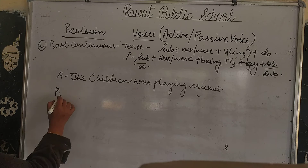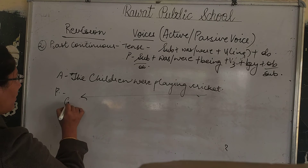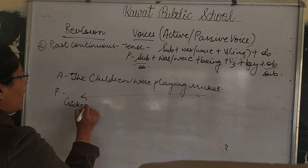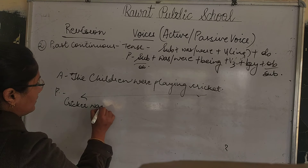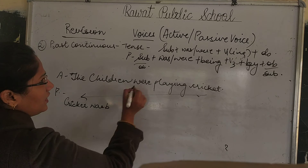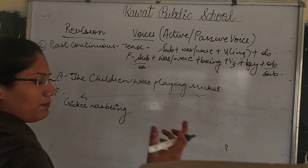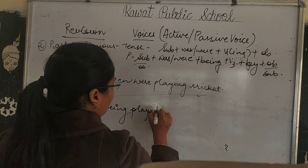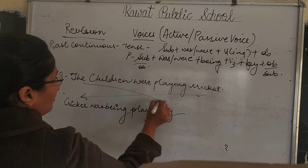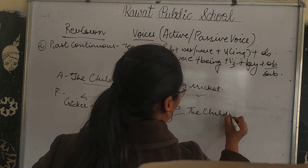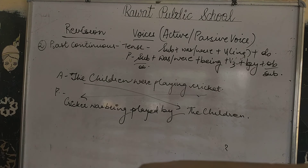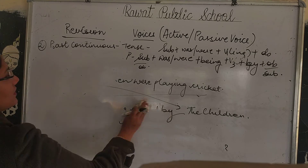To convert to passive: 'cricket' becomes the subject. Cricket is singular, so we use 'was'. Then, according to the formula: 'being', then third form of play — 'played'. Then 'by the children'. The passive sentence is: 'Cricket was being played by the children.'